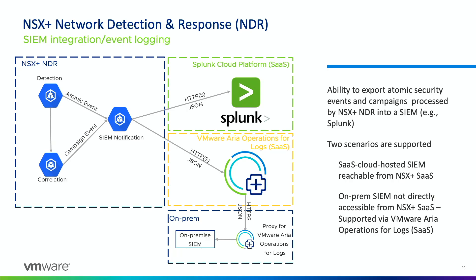There are two deployment scenarios supported today. Number one is a SaaS-based SIEM like Splunk — we have native integration and can send events directly from NSX Plus NDR to a SaaS Splunk instance. The other scenario is an on-prem SIEM that's not directly accessible from the cloud. For that, we can use VMware Aria for Logs — the SaaS-based offering — as an intermediary, then forward logs to an on-prem SIEM via a proxy deployed on-premises.